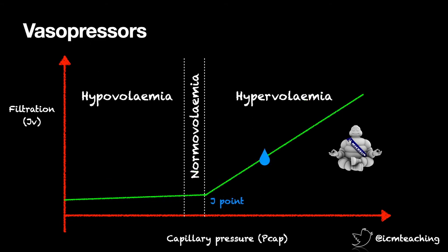So what do we do if our septic or pancreatitis patient is hypotensive? We know that they're not hypovolemic, and we know that any IV fluid we give them will just leak out. Thankfully vasopressors, as well as increasing blood pressure, actually reduce capillary pressures, and therefore filtration and the edema.